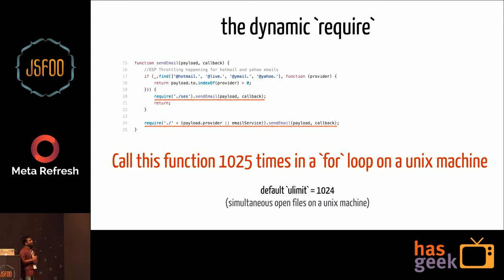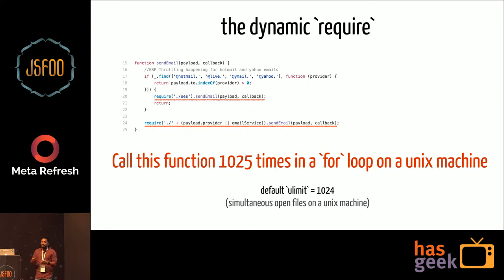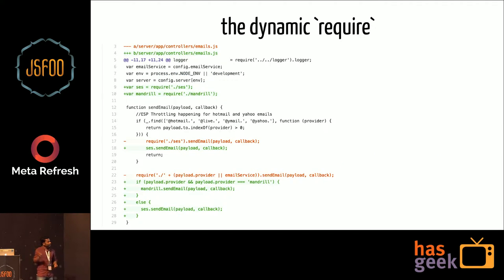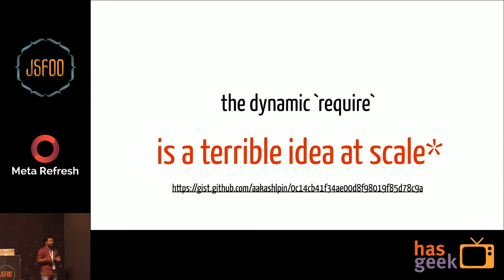What if you call this function 1,025 times in a synchronous for loop? There is something that could go terribly wrong. For every single dynamic require you do, a Unix machine opens that file in memory. Every Unix machine has an upper limit to the number of files that can be simultaneously opened on that process. How I discovered this was when I was sending mass emails to CheapAss users about new features. The code worked fine when the number of users was under a thousand, but when users went beyond a thousand, my code just stopped working. All I had to do was pull those dynamic requires up as static requires, and the code scaled pretty well. Dynamic requires are a pretty terrible idea at scale.